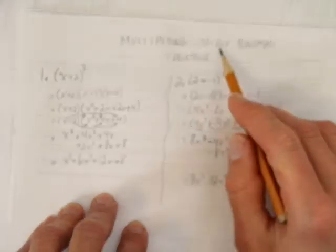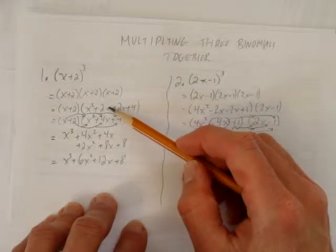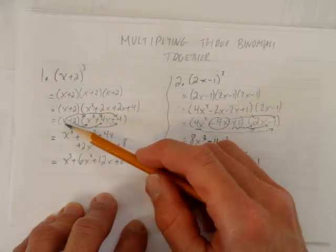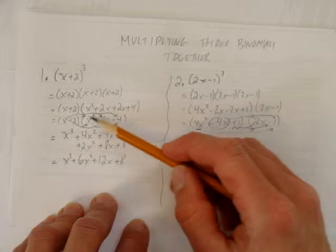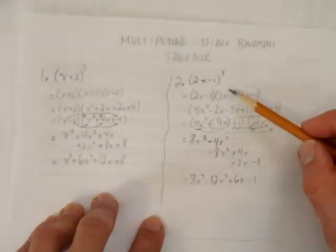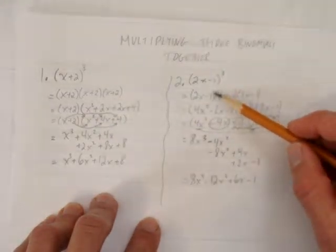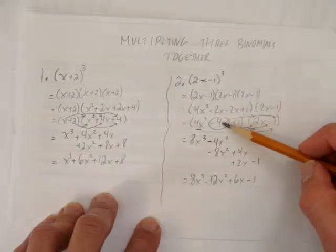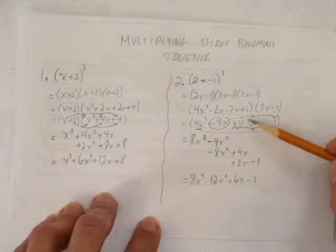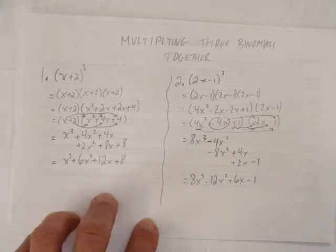So, we've multiplied three binomials together, either by multiplying the first two, then simplifying and then multiplying the first binomial times the trinomial, or, other way around, multiplied the first two binomials together, simplified, and then multiplied each thing in the trinomial by each thing in the binomial.